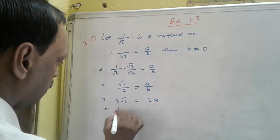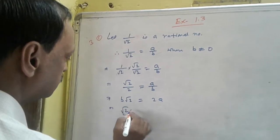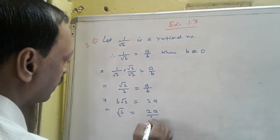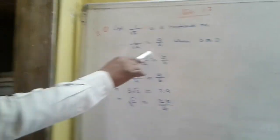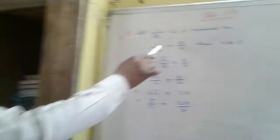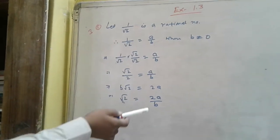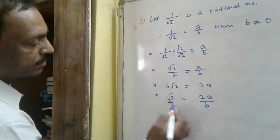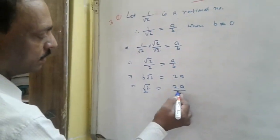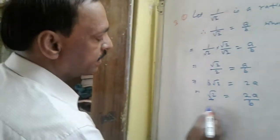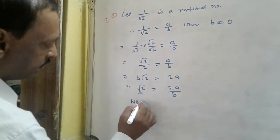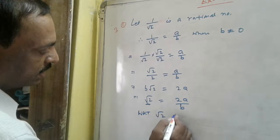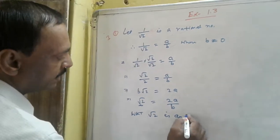So, root 2 is equal to 2a by b. We know that root 2 is an irrational number.